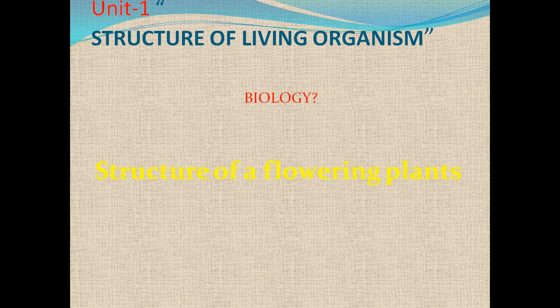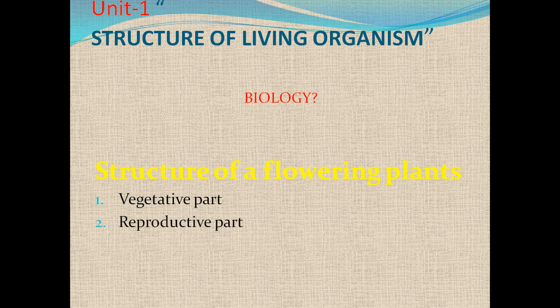The first topic of this chapter is the structure of flowering plants. Flowering plants are those plants which produce flowers. It consists of two main parts: vegetative parts and reproductive parts. First, the vegetative part — they form the main body of the plant.